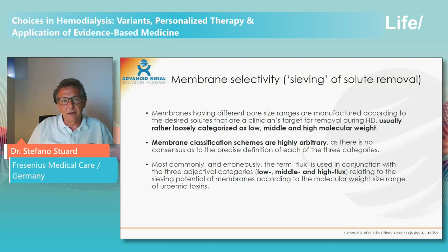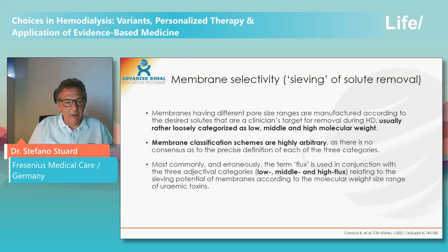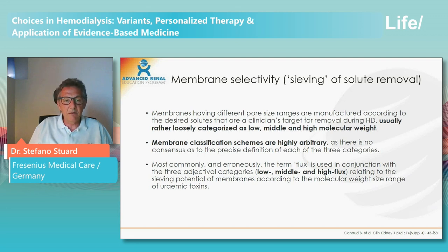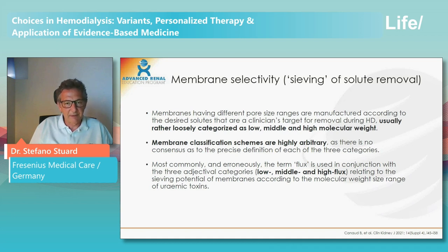According to the sieving characteristics of membranes, we can — in a somewhat arbitrary way — classify dialysis membranes as low, middle, and high flux, relating to the sieving potential according to the molecular weight range of uremic toxins removed. I must emphasize this classification is imprecise and should not be rigidly adopted; it is only to inform. The most commonly evaluated solute used to understand the sieving ability of different dialyzers is beta-2 microglobulin.